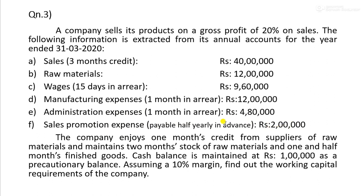Sales promotion expenses payable half-yearly in advance are treated as prepaid expenses, which are a current asset. The company enjoys one month credit from suppliers of raw materials and maintains two months stock of raw materials.